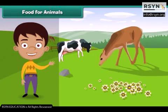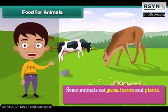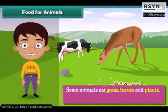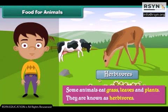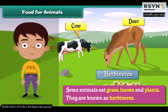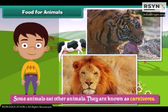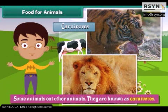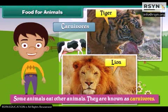Let us learn about what animals eat. Some animals eat grass, leaves and plants — they are known as herbivores. Examples of herbivores are cows, deer etc. Some animals eat other animals — they are known as carnivores. Examples of carnivores are lions, tigers etc.